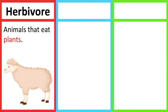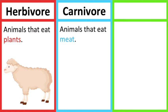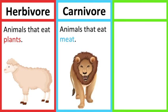Carnivores are animals that eat meat. For example, lions eat only meat; therefore, they are carnivores.